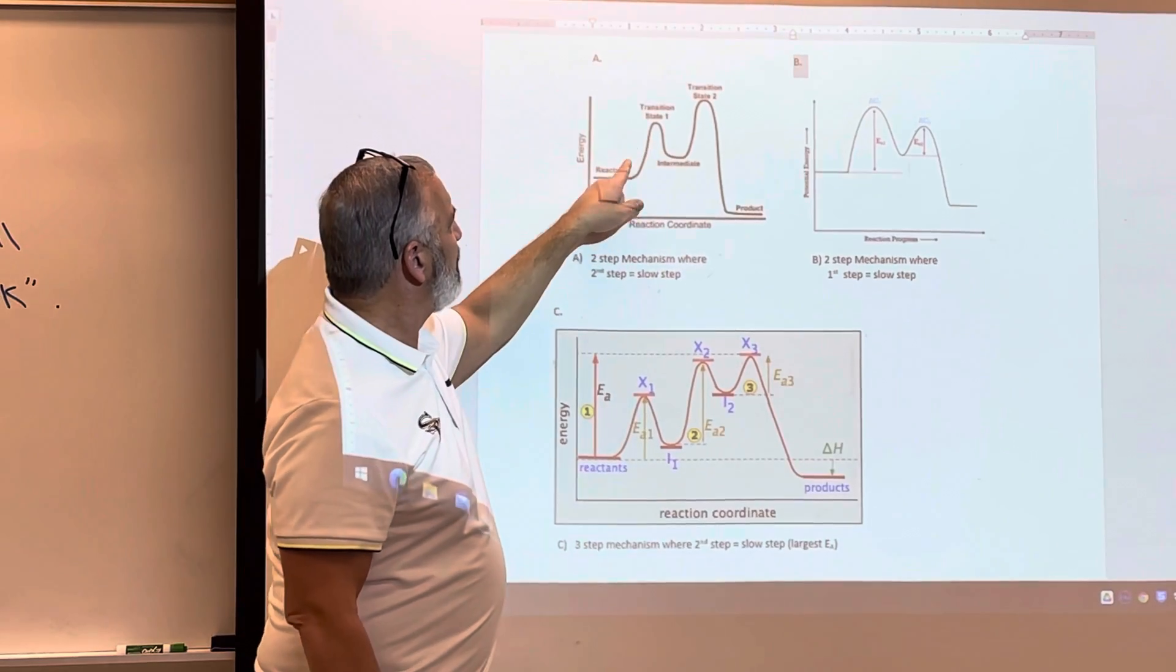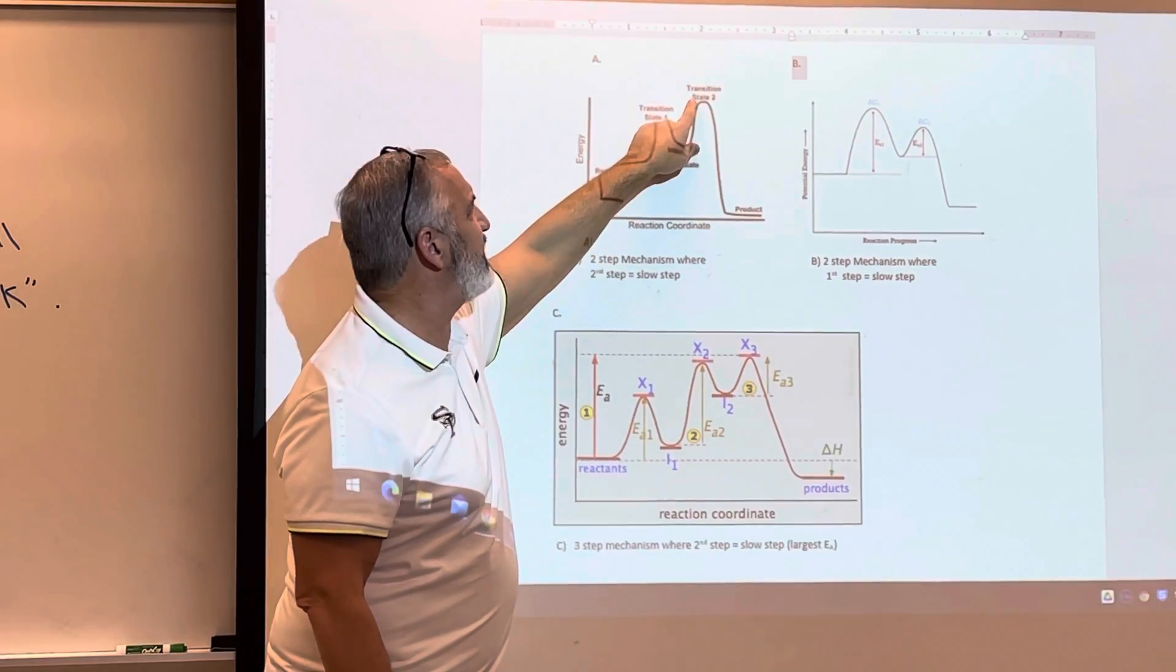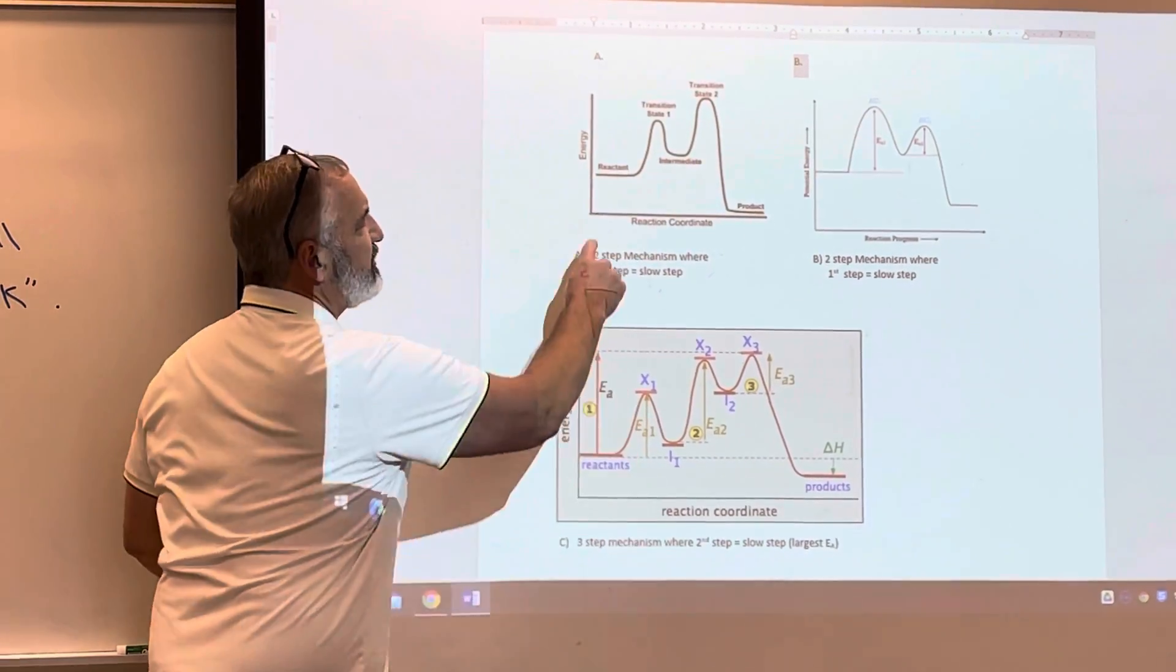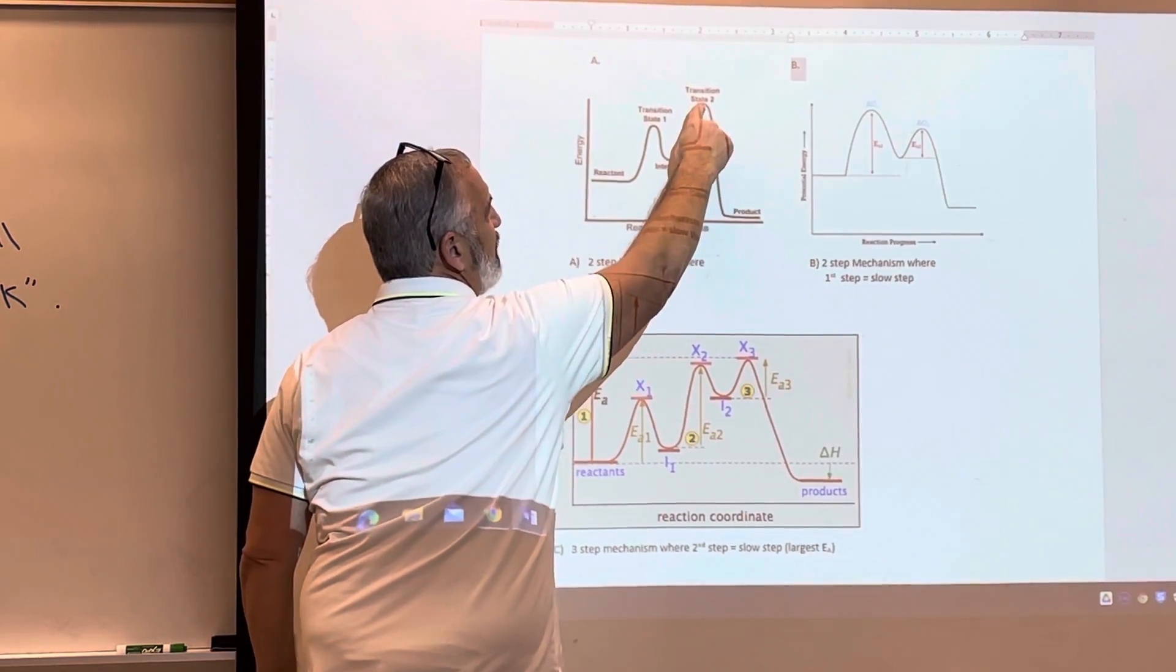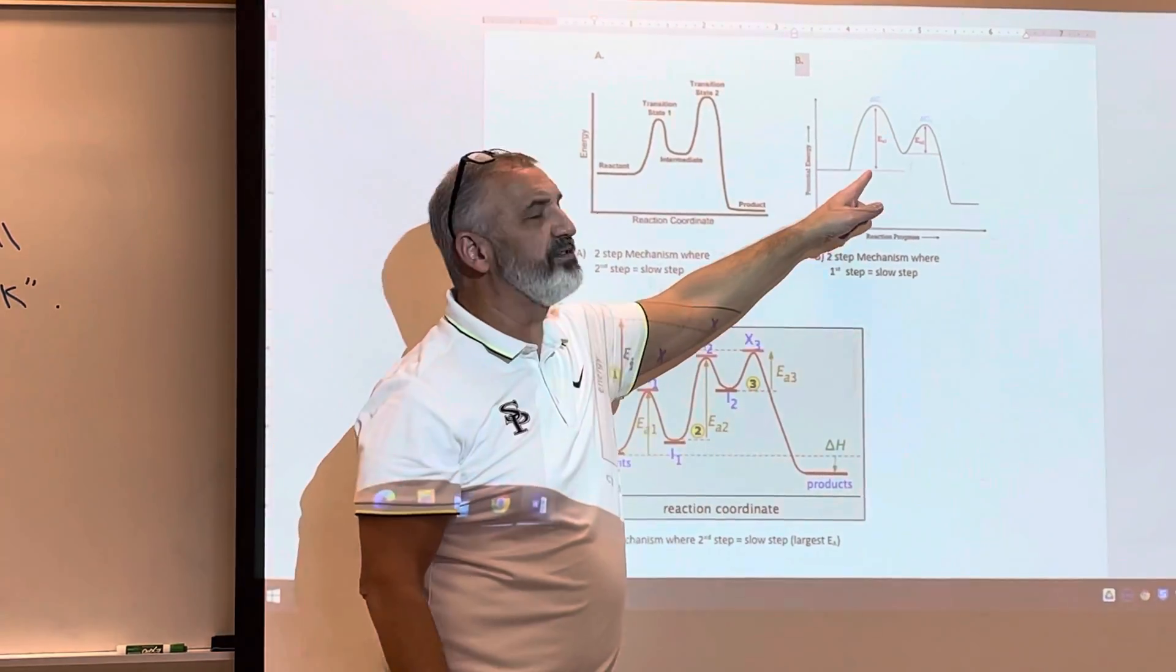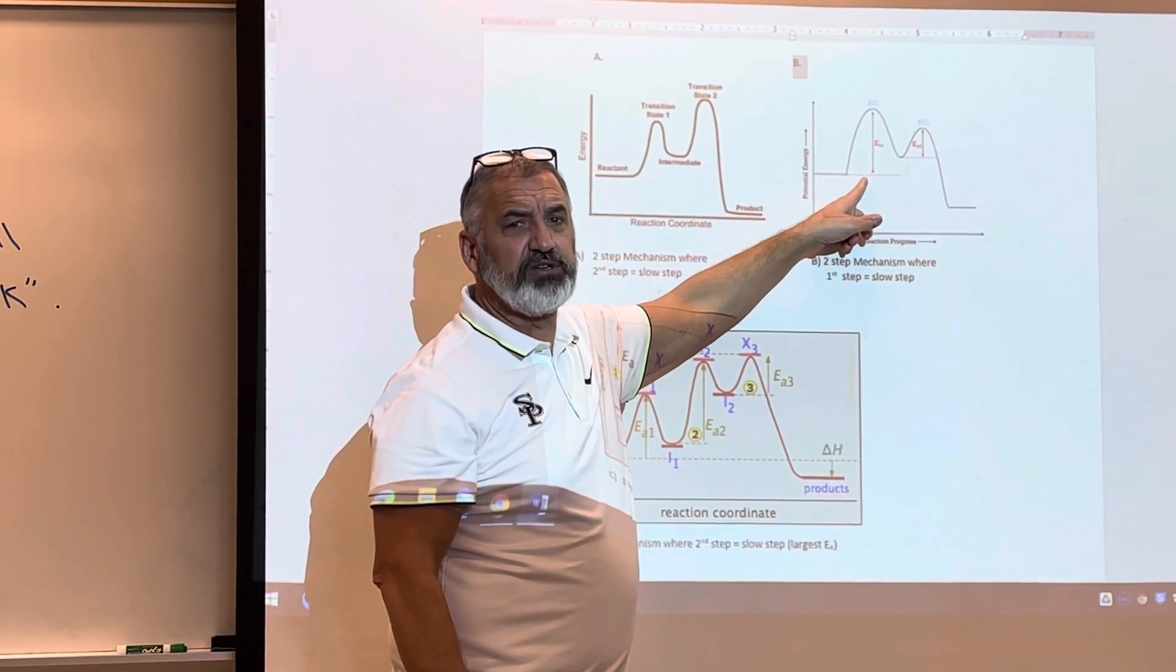When we look at this, here's your second step, the activation energy is greatest here. Activation energy is measured from here up and then from where the intermediate forms here up. And you can kind of see this on this one - this is a two-step mechanism and now the first step is the slow step, which means it's the rate determining step.